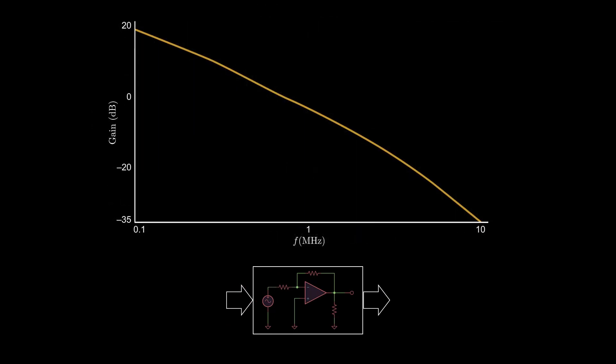In this op amp circuit, low frequencies are amplified. At 100 kHz, signals are amplified by nearly 20 decibels. That's an amplification of 100 times.